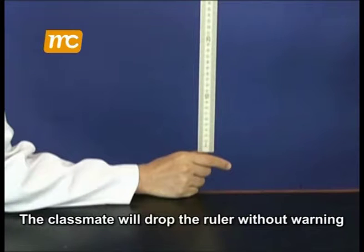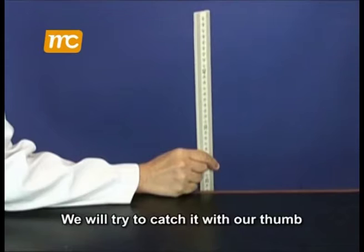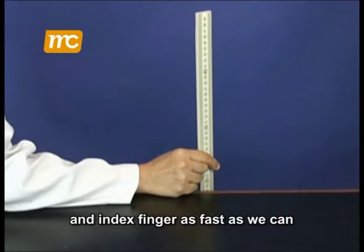The classmate will drop the ruler without warning. We will try to catch it with our thumb and index finger as fast as we can.